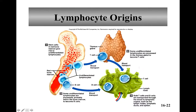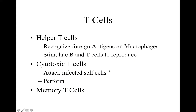T cells go to the thymus gland to become differentiated and then travel through the blood to end up in the lymphatic system. There are three kinds of T cells we'll discuss. Helper T cells recognize foreign antigens on macrophages. The macrophages eat the bacteria, display them on their receptors to warn other cells, and stimulate B cells and T cells to reproduce.